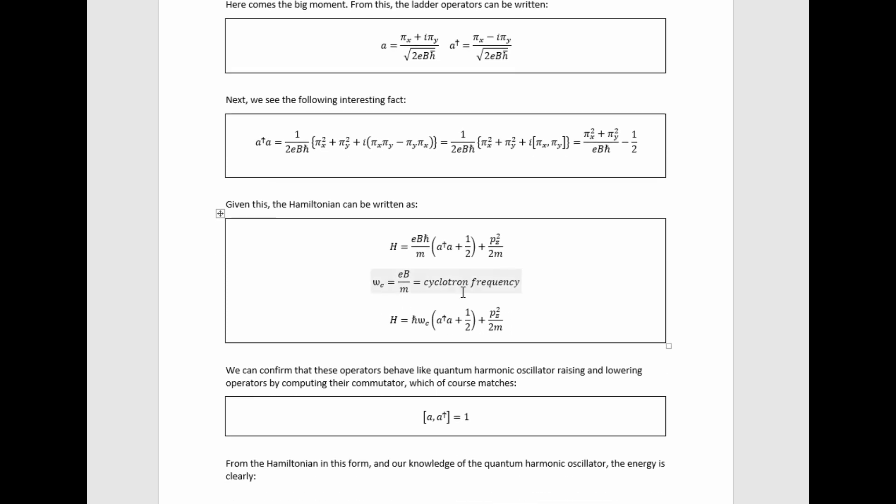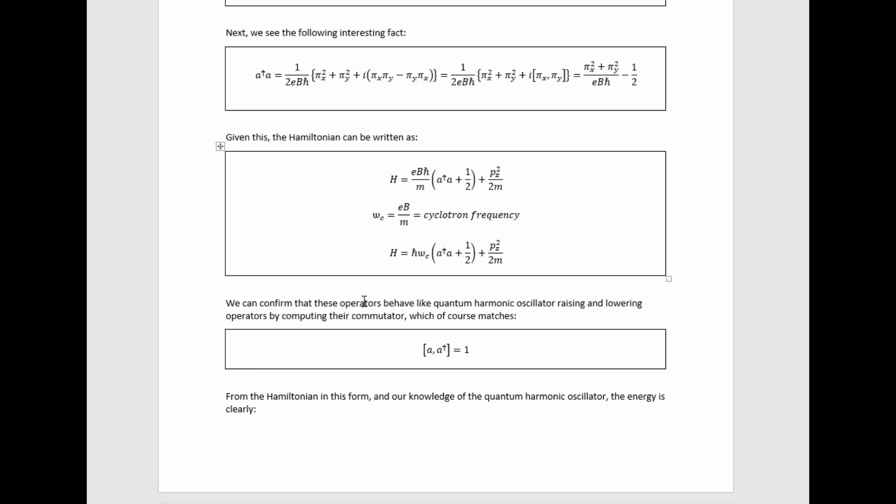The Hamiltonian becomes this. We can clearly see something proportional to the harmonic oscillator Hamiltonian in there. We can define the cyclotron frequency there, and now this really looks like the harmonic oscillator Hamiltonian, except with one extra term here for some unconstrained motion in the z direction.